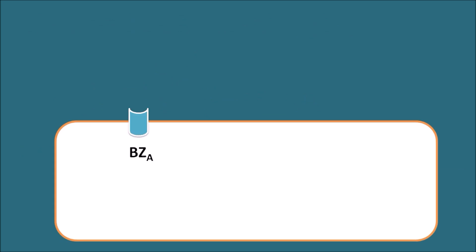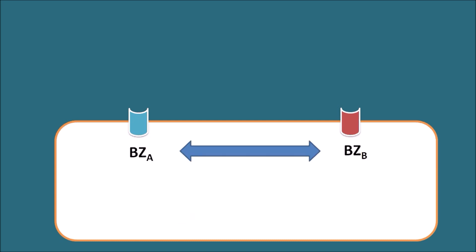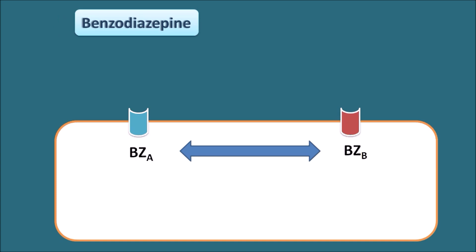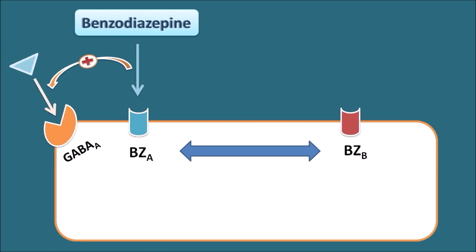Suppose this is the GABA-A receptor. On the GABA-A receptor, benzodiazepine-A receptors are present which are in equilibrium with another conformation, benzodiazepine-B receptors. Both are in equilibrium such that the GABA-A receptor may be expressed with any of these two conformations. Now benzodiazepines can act on the benzodiazepine-A receptors, thereby they increase the action of GABA on the GABA-A receptors, which increases the anxiolytic effect. So when benzodiazepines bind to the benzodiazepine-A conformation they decrease anxiety and increase sedation.